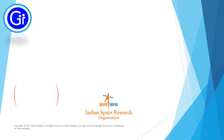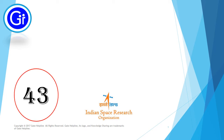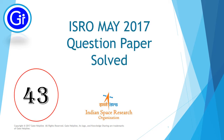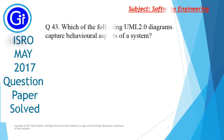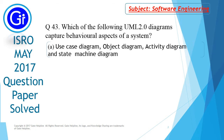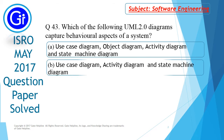Hi friends, today we are going to see question 43 from ISRO May 2017 question paper. Question number 43 is: which of the following UML 2.0 diagrams capture behavioral aspects of a system? And these are the options.